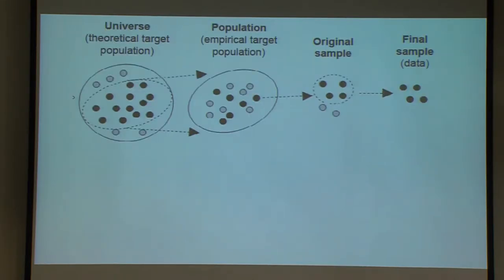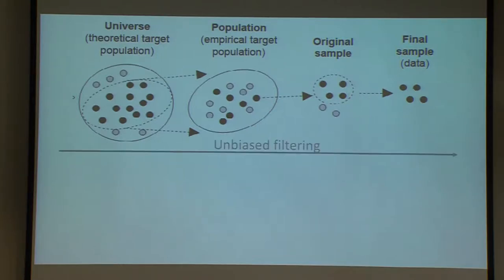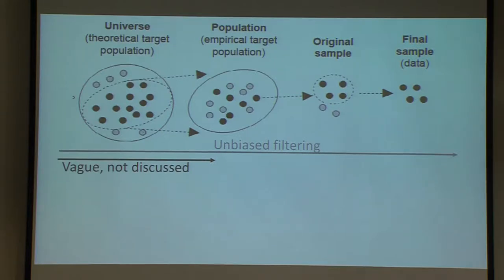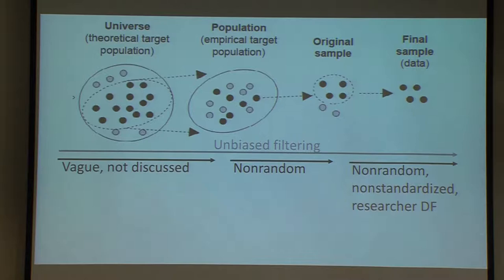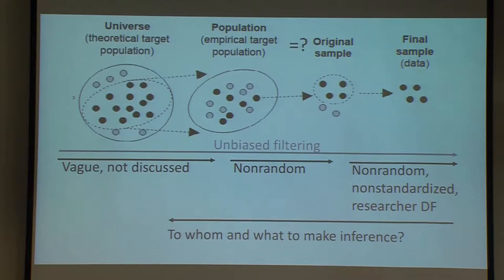In a schematic visualization, we always have theoretical and empirical targeted populations from which we draw a sample. In a perfect world, we should have invariant transformation at every filtering step. But nowadays, the theoretical versus empirical target populations are often very vague and not discussed enough. The second filtering — from population to sample — is often very non-random and arbitrary. Why 30 days of Twitter data? Why this time period? There are lots of unjustified arbitrary decisions. And the third filtering also has non-standardized protocols. We basically have lots of researcher degrees of freedom.